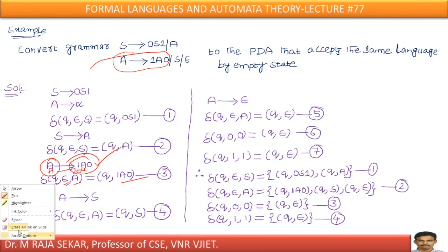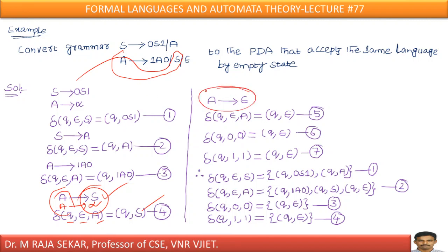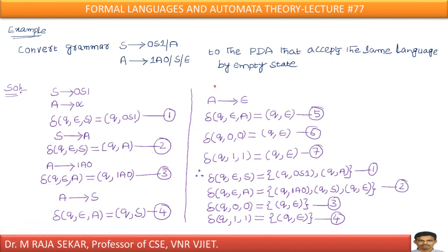Next, capital A goes to S. Comparing with capital A goes to alpha: delta of (Q, epsilon, A) = (Q, S). Also, capital A goes to epsilon, which gives: delta of (Q, epsilon, A) = (Q, epsilon).